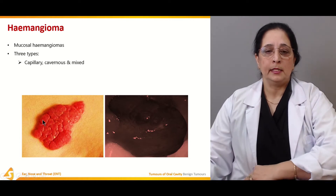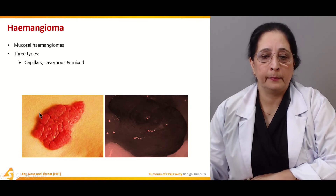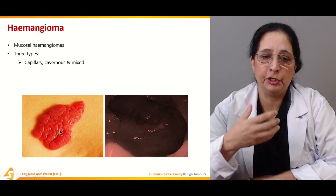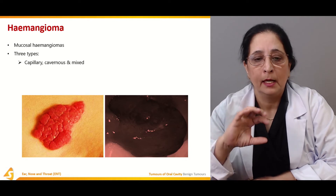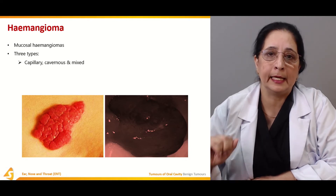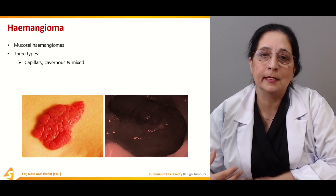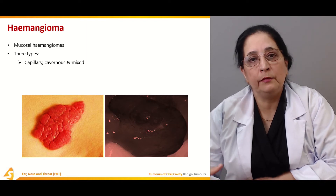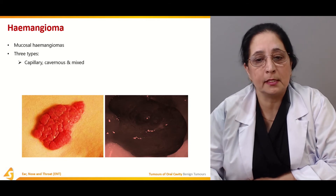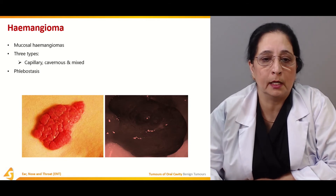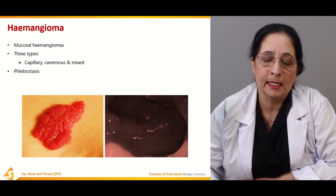This picture shows a cavernous hemangioma, which occurs after a period of time and leaves a scar on the skin. It is due to the involvement of small blood vessels — capillaries under the skin — that leads to the formation of a plexus. So capillary, cavernous, and mixed types of angiomas are present.